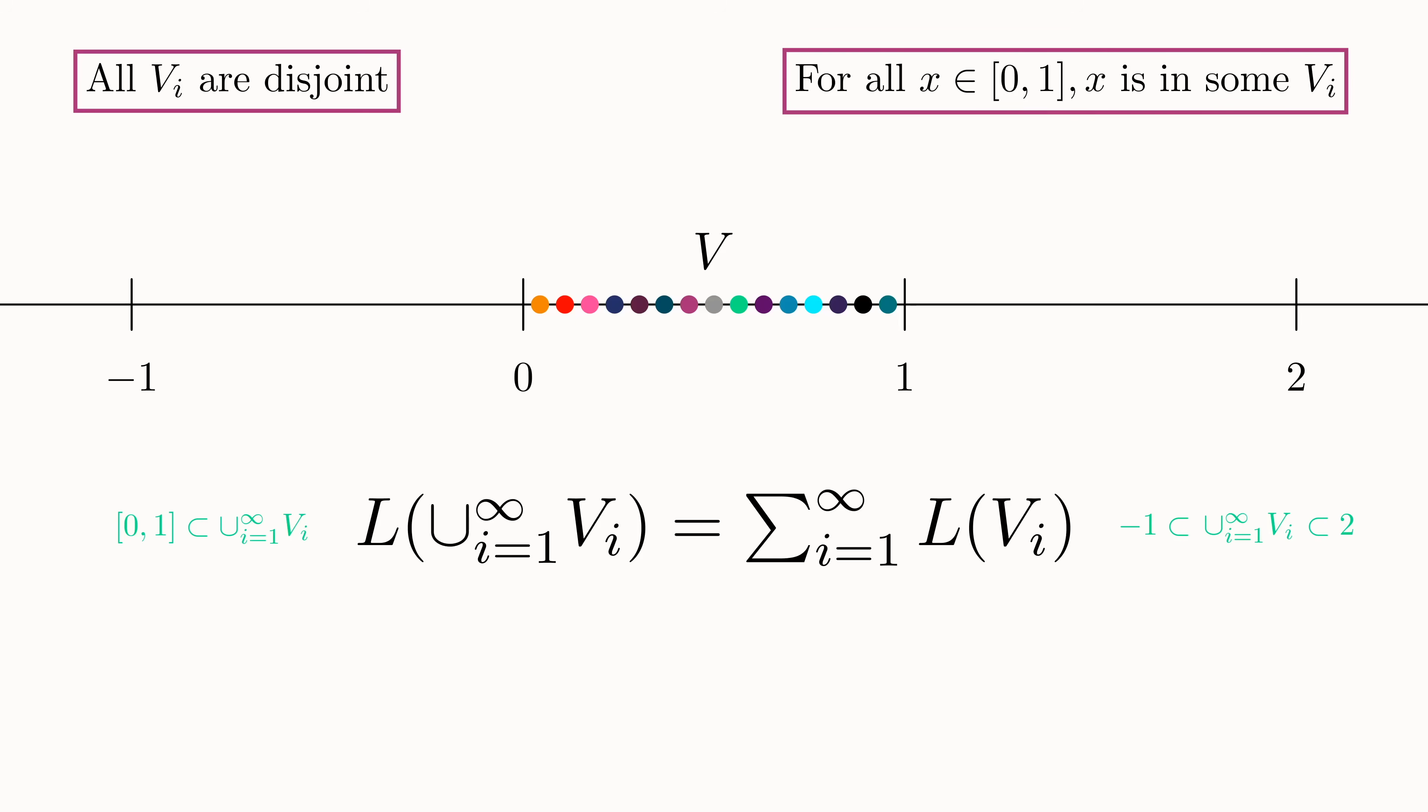But each VI is just a translated copy of the original V. So their sizes must be the same. And the size of the union is an infinite sum of whatever the length V is. Additionally, the length of the two intervals on either side provides a constraint on how large this sum can be. It must be between one and three.